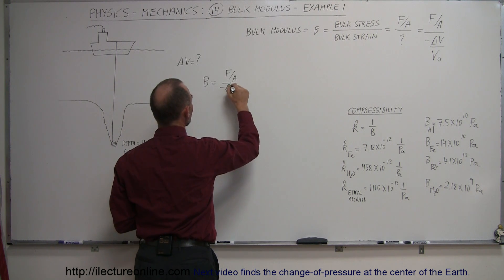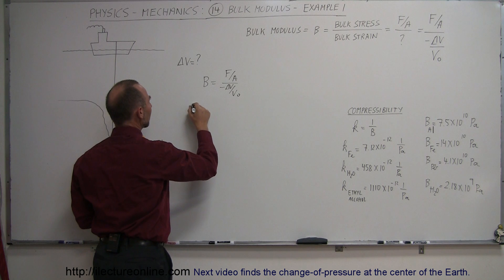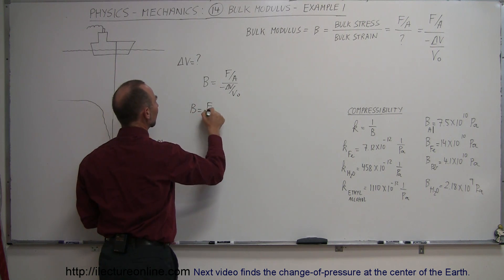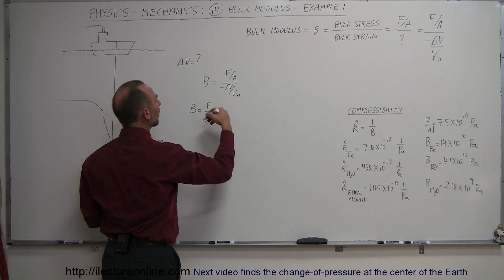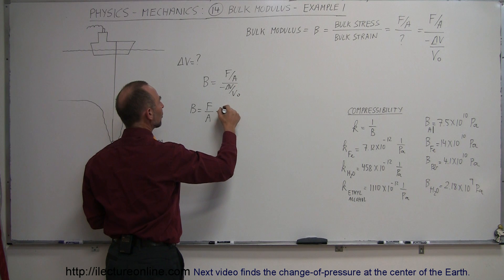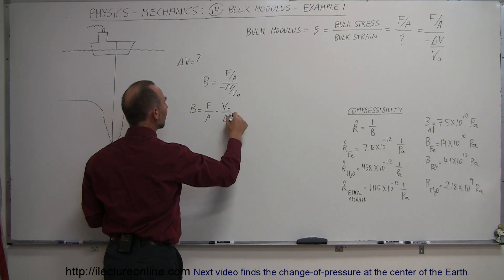B is equal to the force per unit area divided by the negative change in the volume over the original volume. Now, I forgot my BV here. All right. There we go. Which, of course, can be written as B is equal to force divided by area times the inverse of this denominator, which is V sub-naught over delta V.